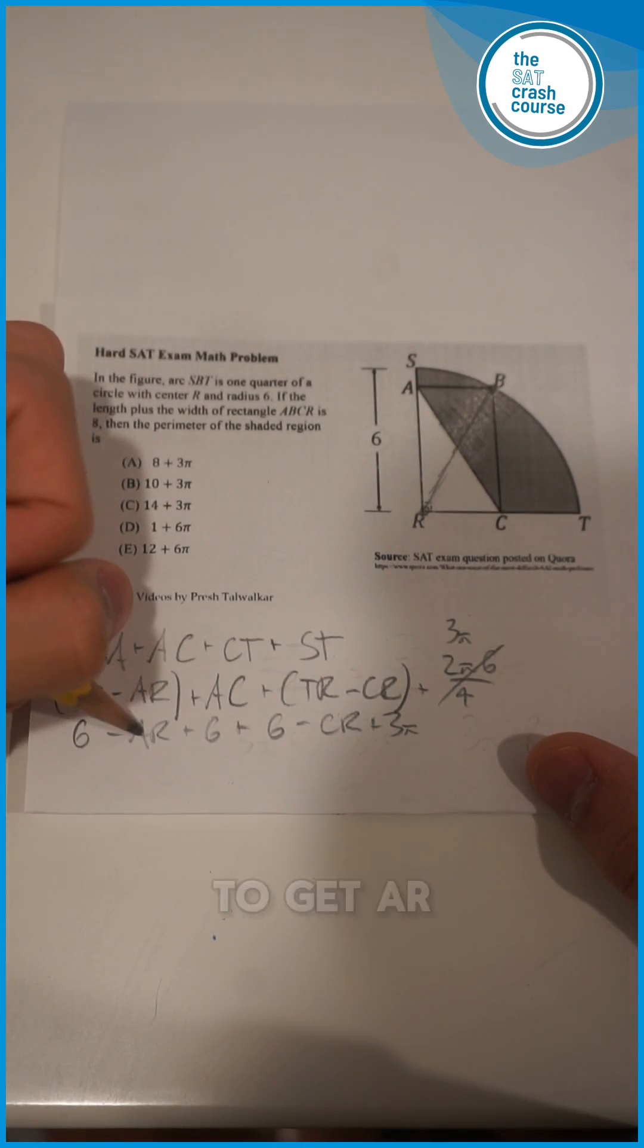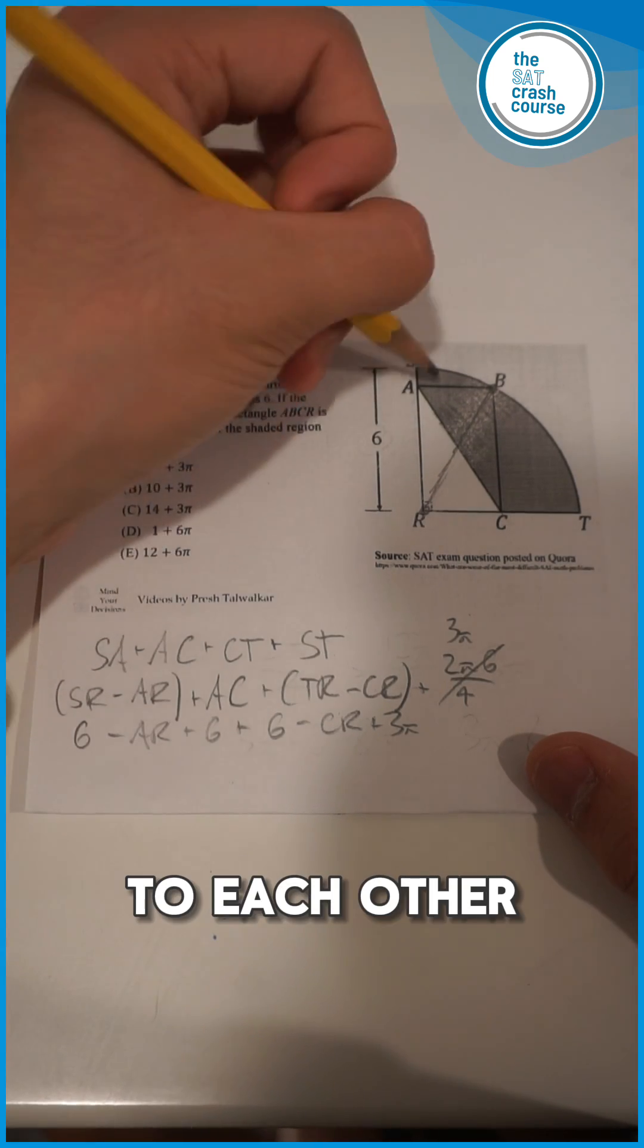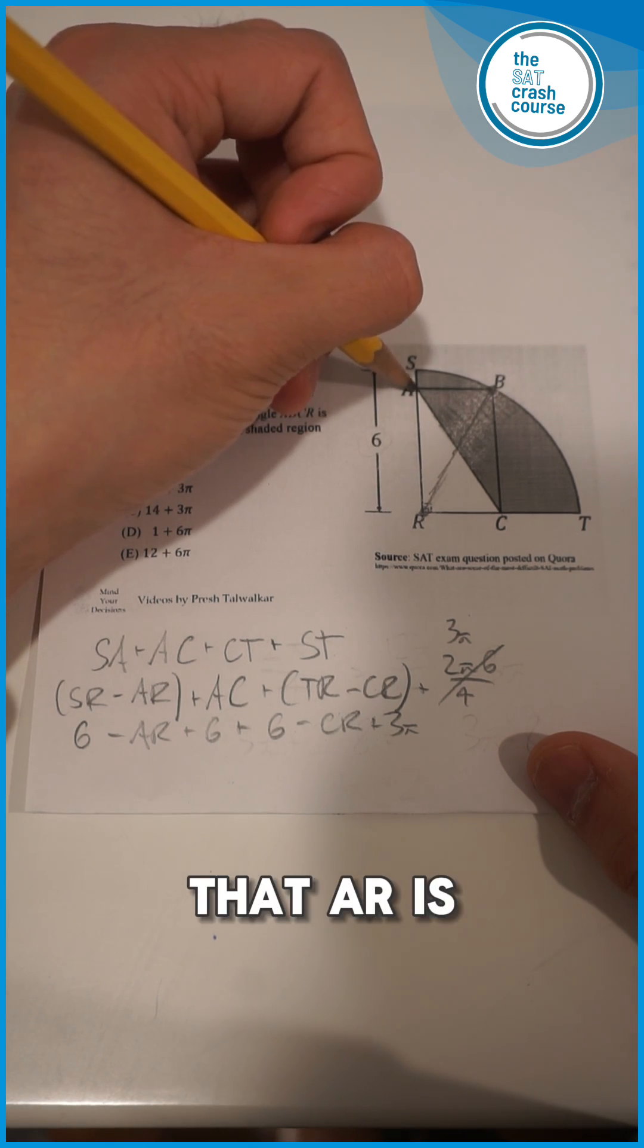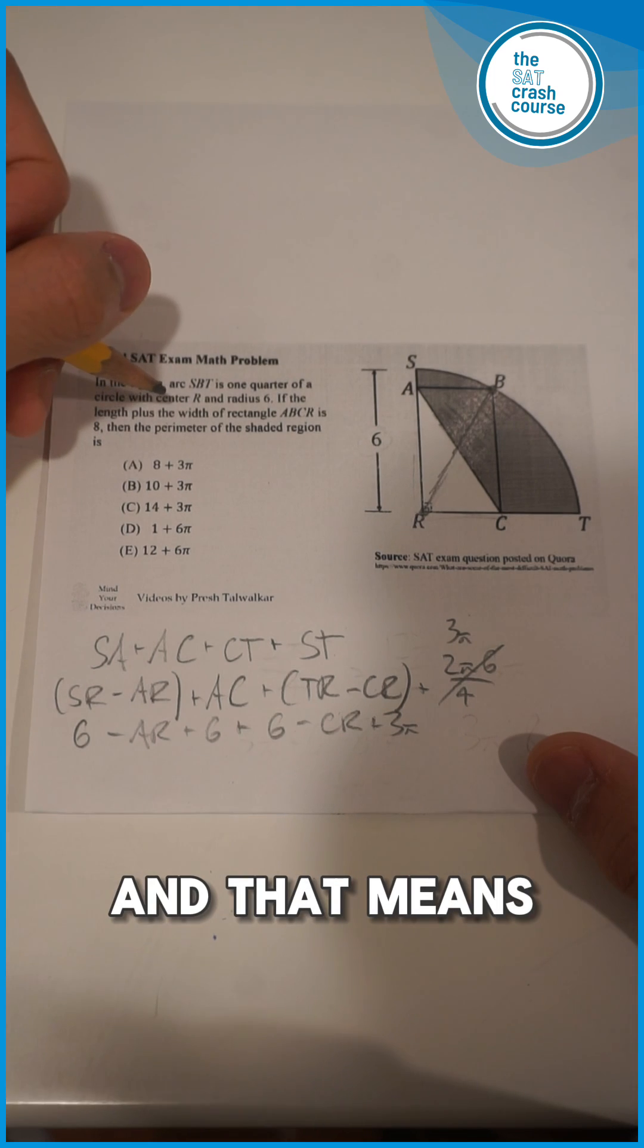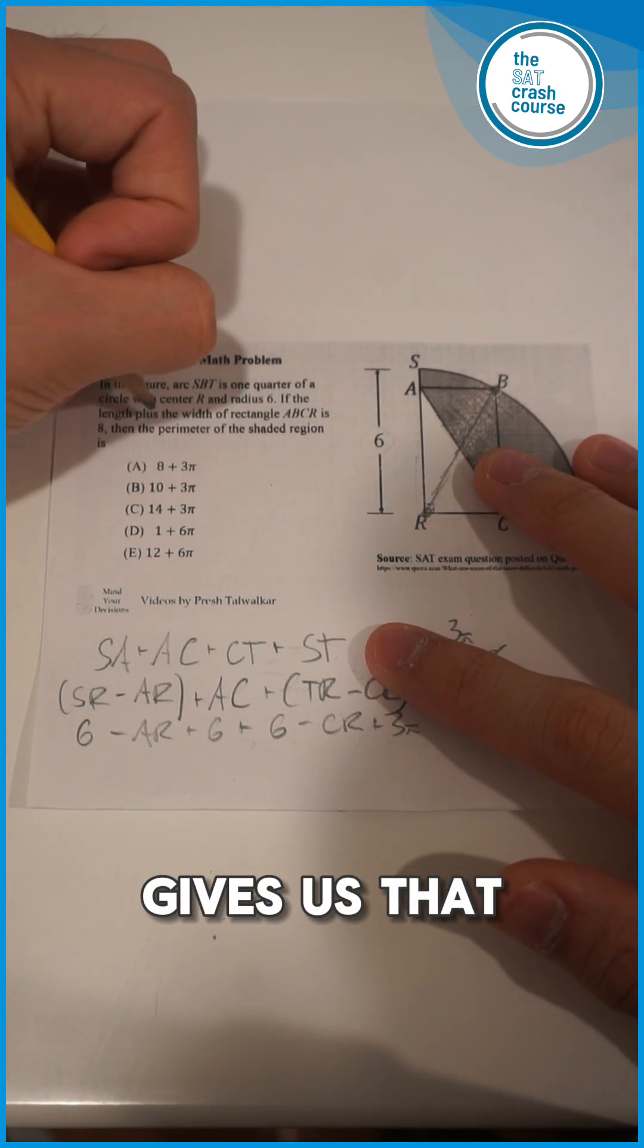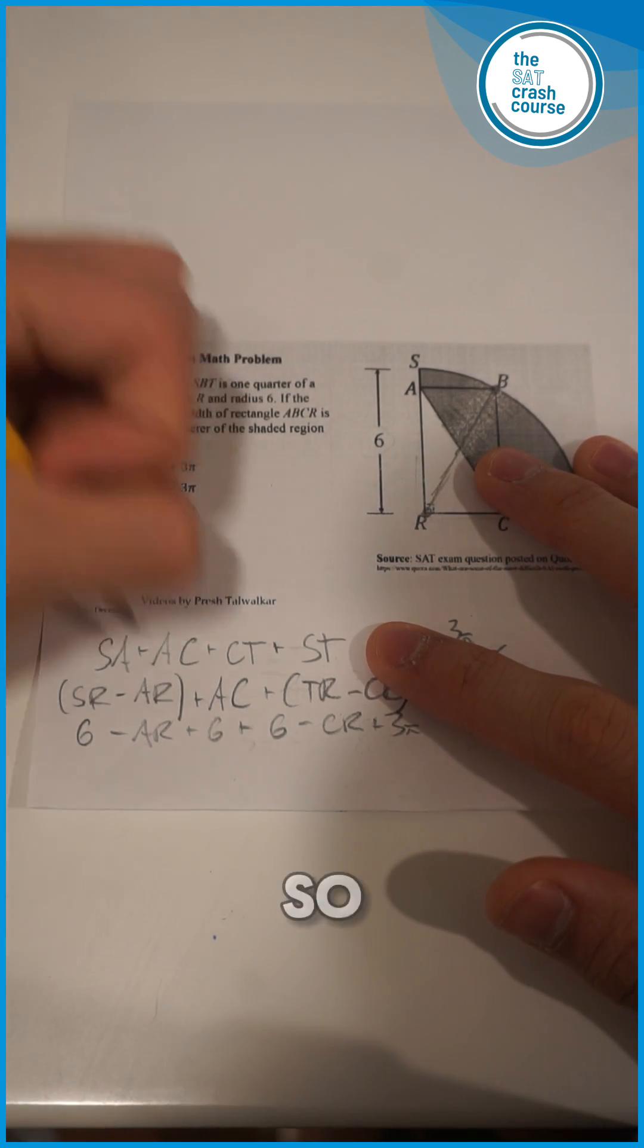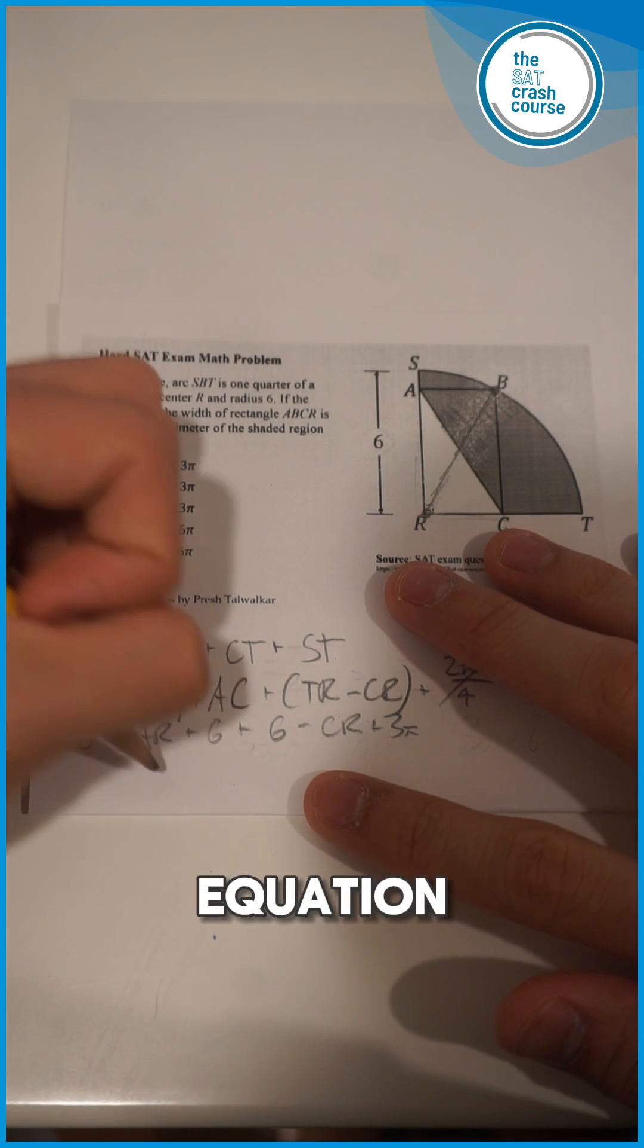Now, if we rearrange this to get AR and CR next to each other, we actually see that AR is this length, and CR is this width. And that means the question actually gives us that the length plus the width is 8. So that means we're going to be subtracting 8 for this entire equation.